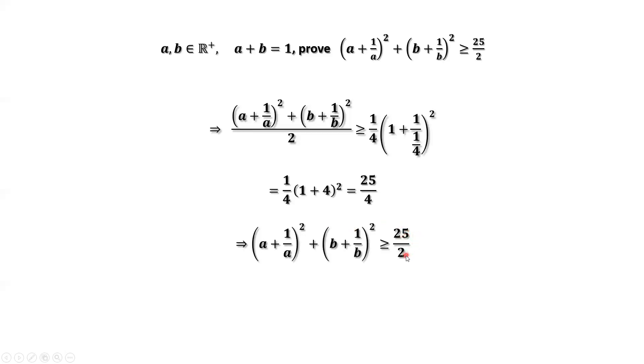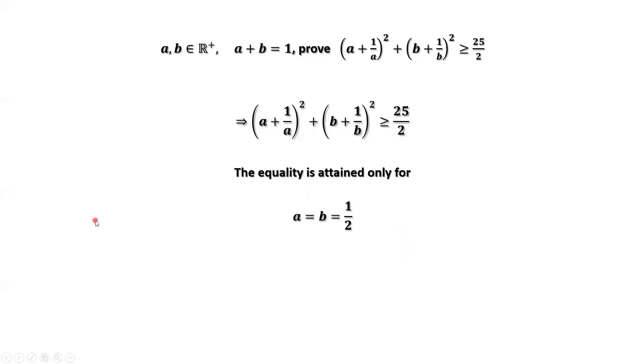25/2 is the best lower bound for the left-hand side. Yes. The equal sign is true when a equals b equals 1/2. It is easy to check it. Just replace a by 1/2, 1/a by 2. 2 plus 1/2 is 5/2. (5/2)² squared. You will get 25/2.